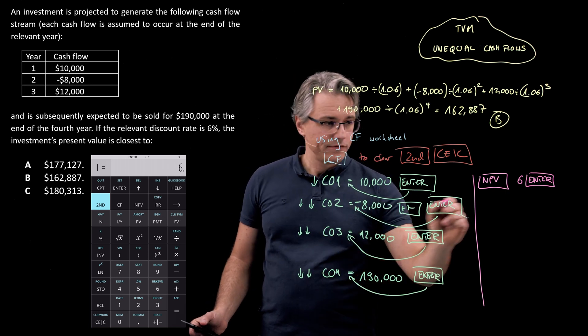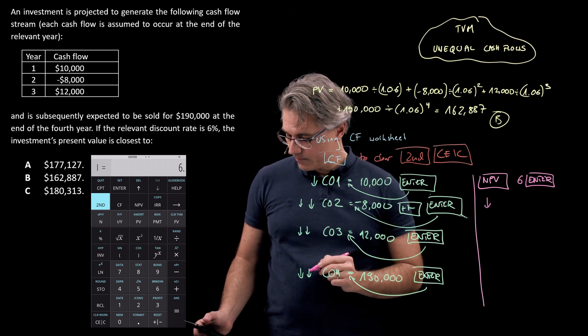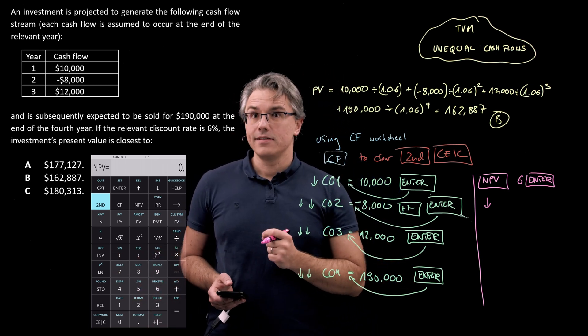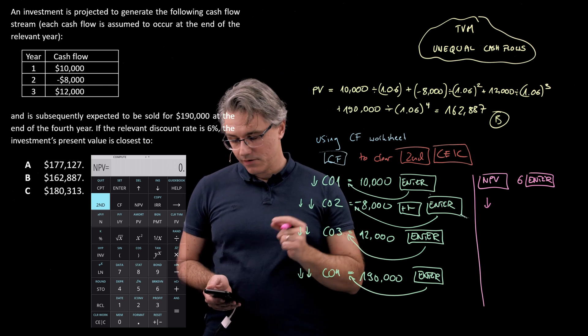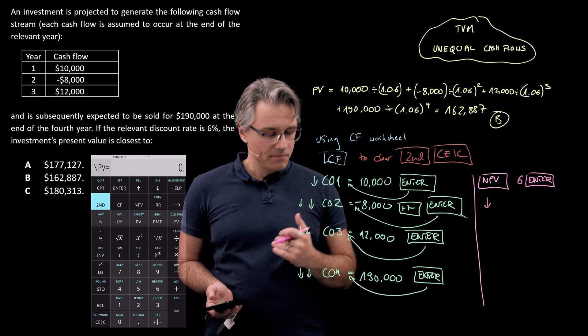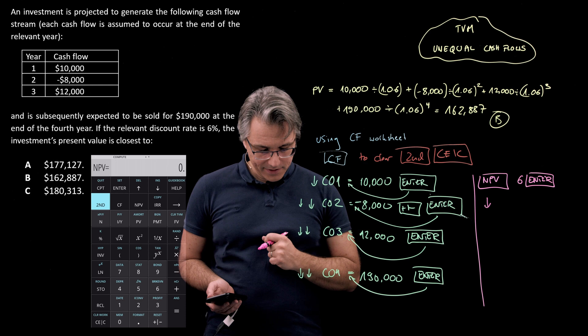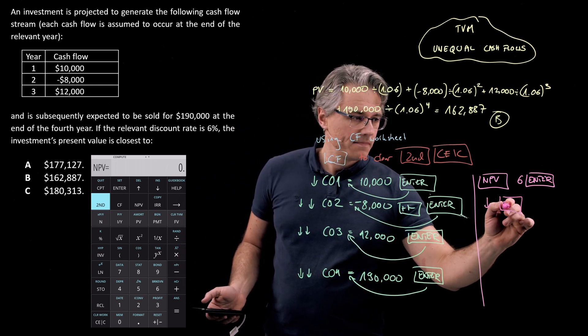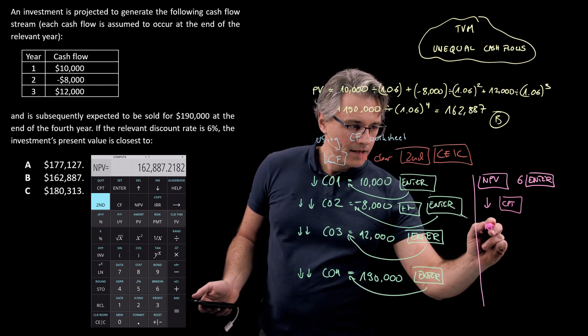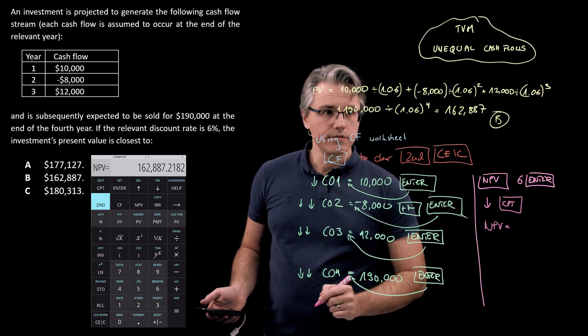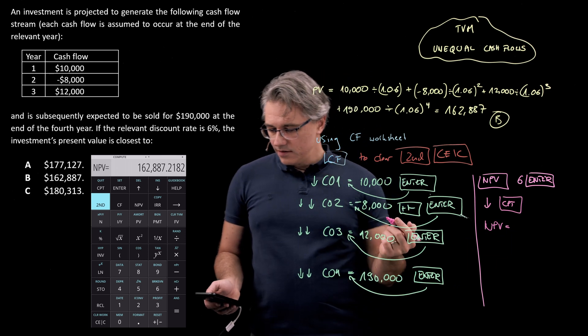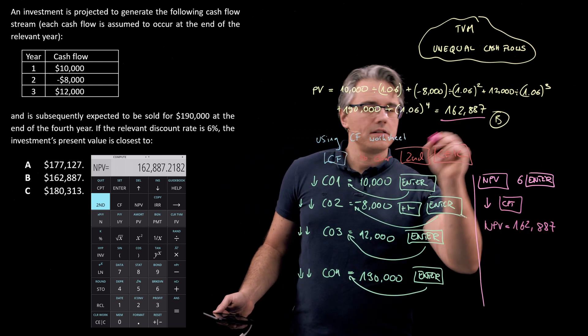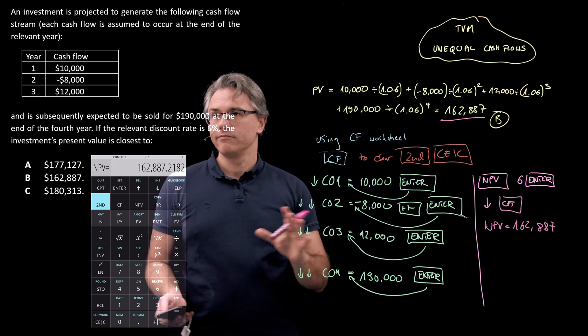Now, go down with the down arrow, and it says NPV. And at the top of the display, it's actually saying, I'm ready to compute. So, it's kind of prompting you simply to press the CPT key. So, press CPT, compute, and it says, okay, NPV equals to 162,887,